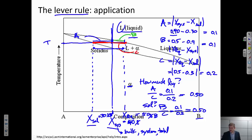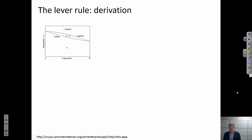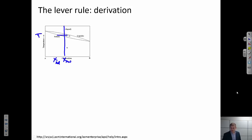That's about right, because the system composition line is about in the middle of the tie line. In reality one number was probably a little off, but this is how we apply the lever rule. Now let's talk about derivation — where does the lever rule come from? It's related to mass balance. We look at a system at some composition and some temperature, using the composition of the solid, the system, and the liquid.